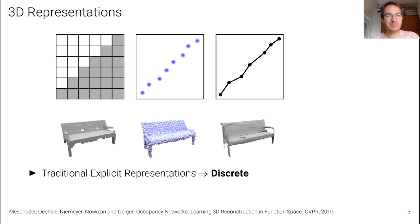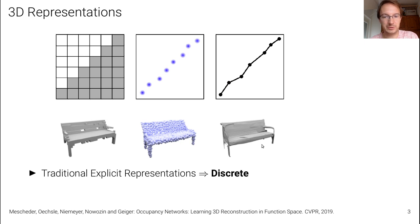Traditionally, 3D reconstruction using deep learning has been approached using discrete output representations such as voxels, point clouds, or meshes. However, each of these representations comes with certain disadvantages that stem from their discrete nature. Voxel-based representations do not scale to very large resolutions, point-based representations lose topology, and mesh-based representations are difficult to infer via neural networks.